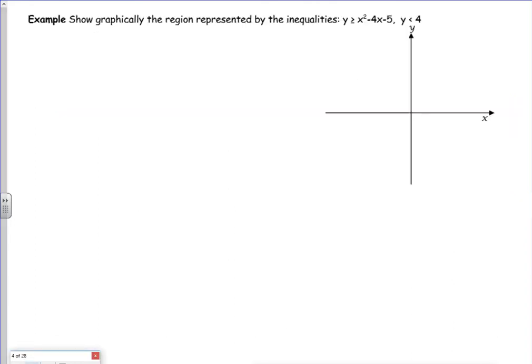All right, so it says show graphically the region represented by y is greater than, so I want the y values that are above the curve. And then I've also got that one to look at. Right, so in your graphical calculators, if you just put in x squared minus 4x minus 5.